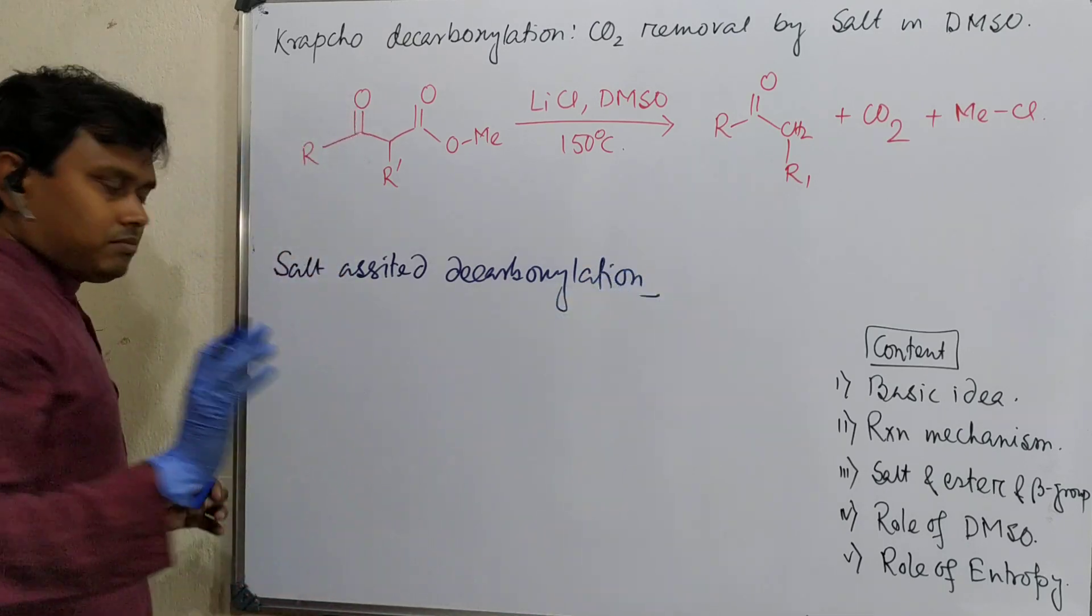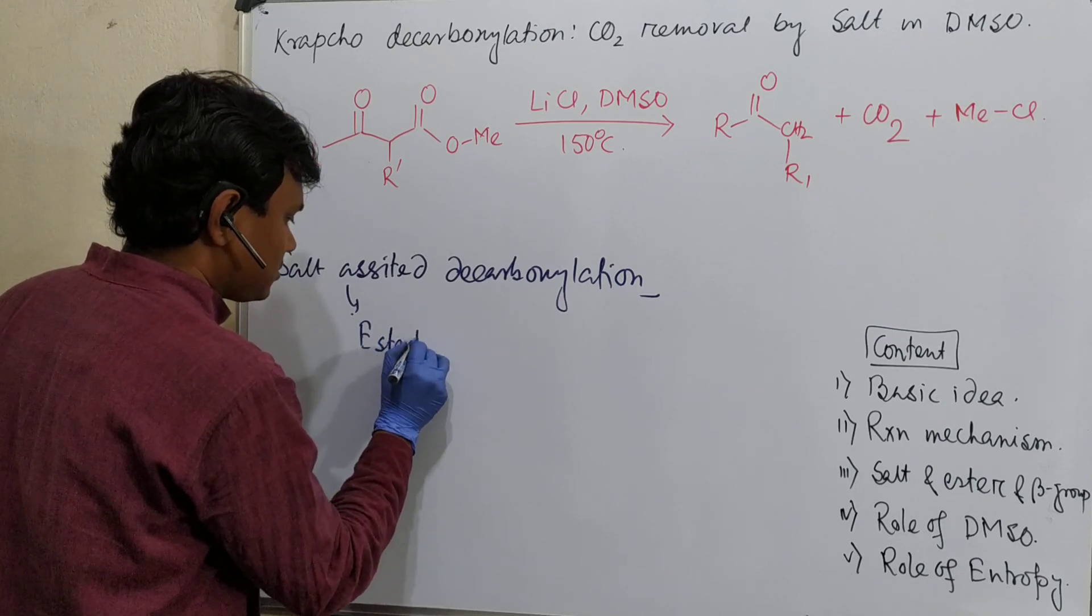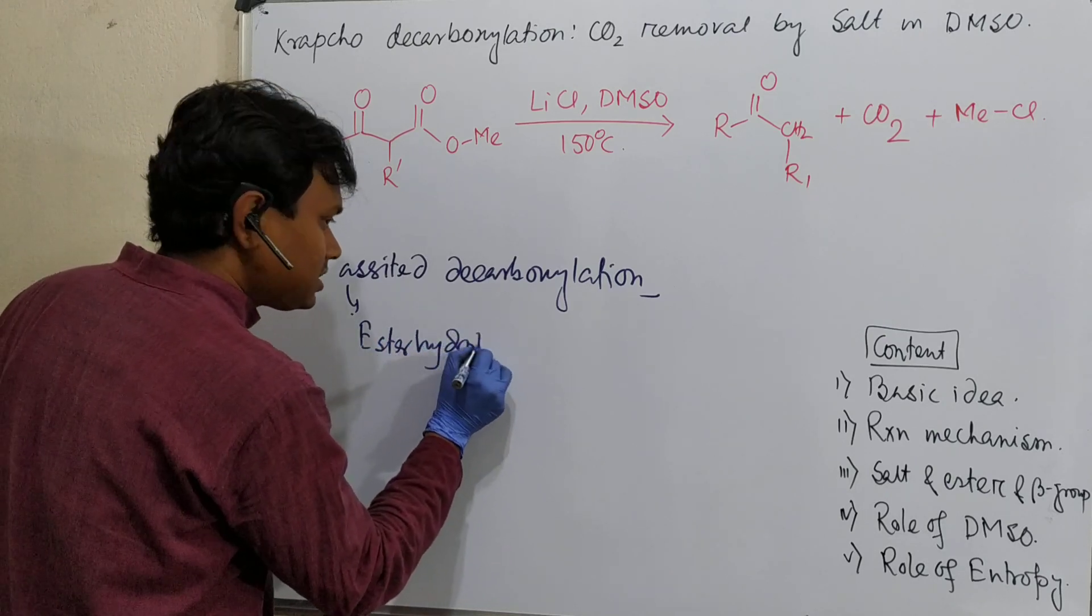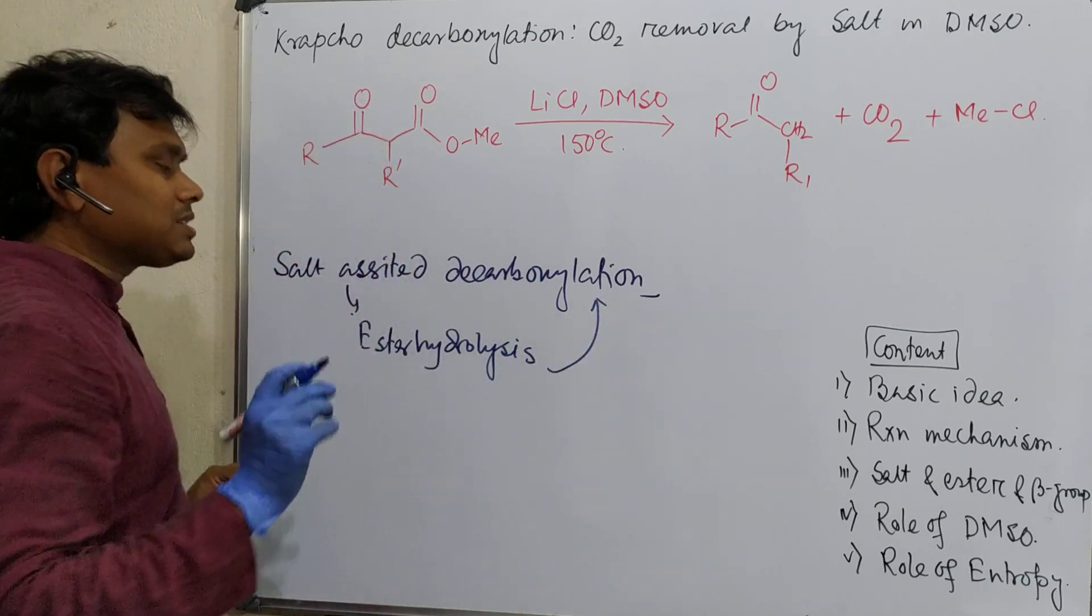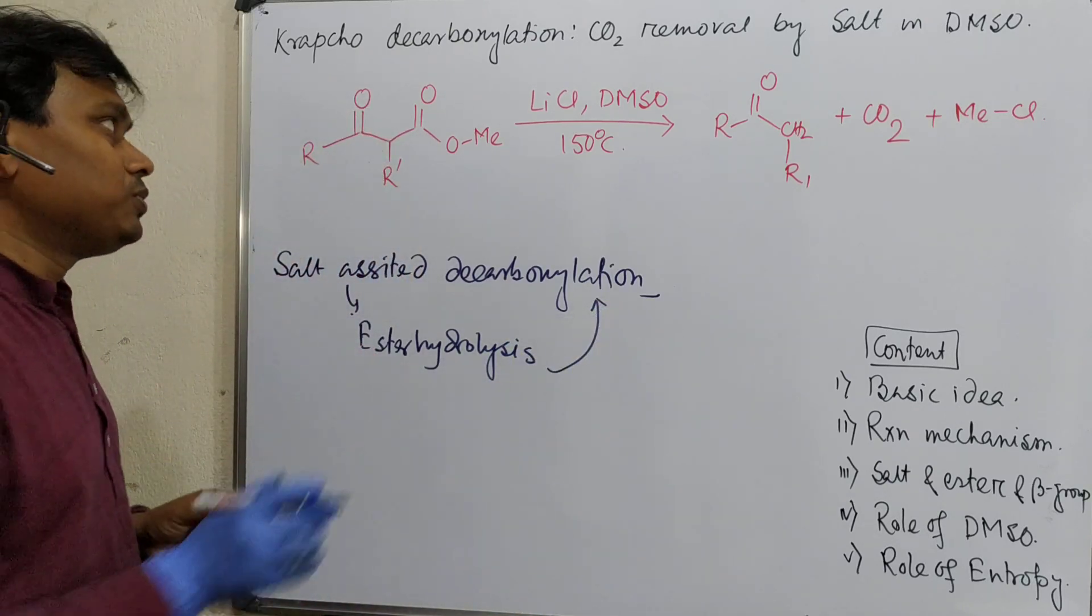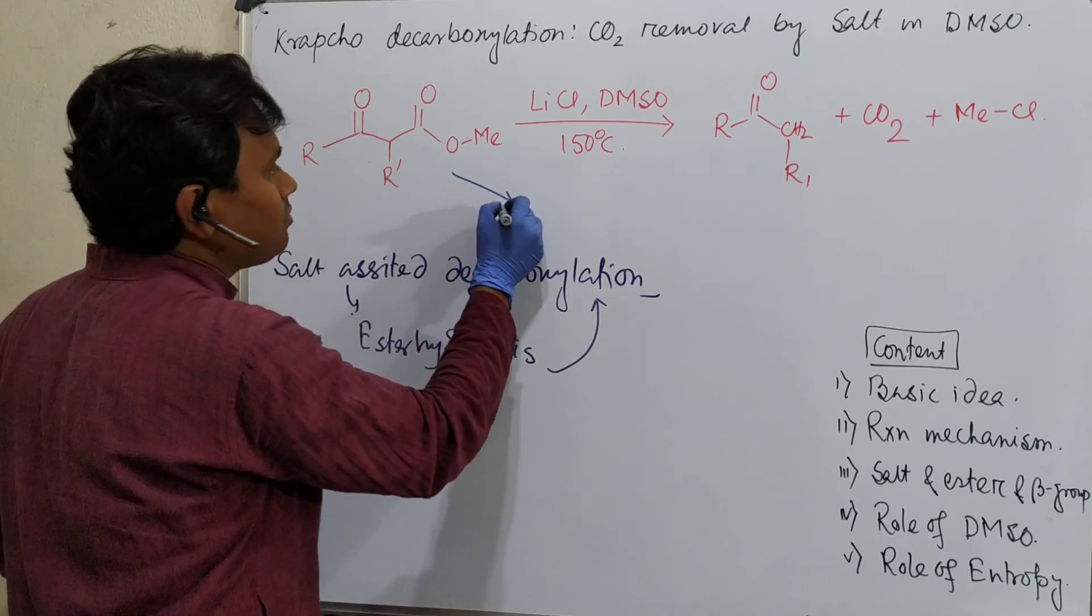Generally, or better to say, salt-assisted ester hydrolysis which is followed by decarboxylation. Because decarboxylation is not possible until it becomes acid. Because when it becomes acid, it becomes R' C=O OH.